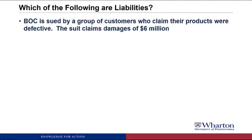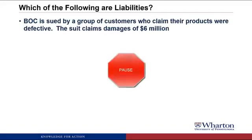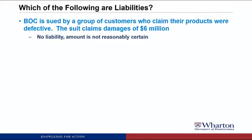Finally, BOC is sued by a group of customers who claim their products were defective, with the suit claiming damages of $6 million. This would not be a liability. It does meet the first criteria — there's a potential obligation based on a benefit received in the past, which was selling products that turned out to be defective. However, it doesn't meet the second criteria because the amount of payment is still uncertain. Until there's a settlement or trial, we don't know whether we have to pay anything, so we don't have to record a liability.